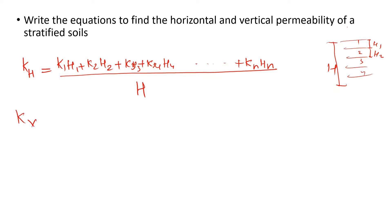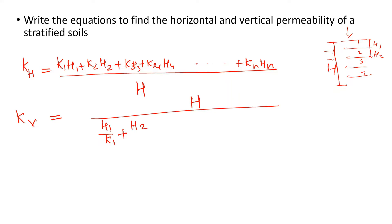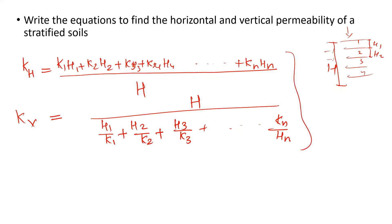For vertical flow, the vertical permeability Kv is given by: Kv = (H1 + H2 + H3) — the total depth H — divided by (H1/K1 + H2/K2 + H3/K3) for the number of strata. If you learn this equation, you don't have to memorize the others separately.